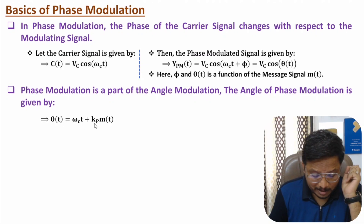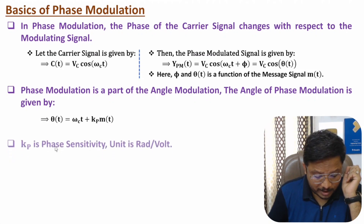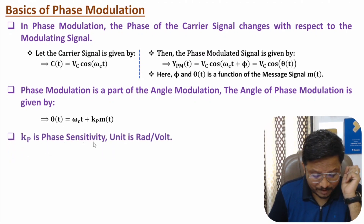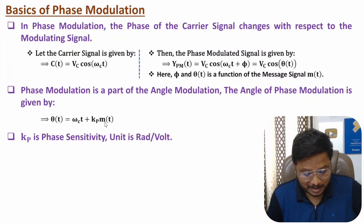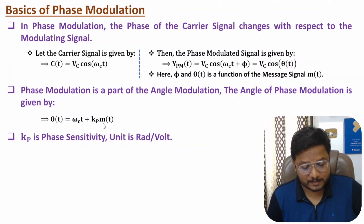The angle of phase modulation is θ(t) = ωc·t + φ, where φ = kp·m(t). As we change the message signal, the overall phase θ(t) changes. The phase changes as per kp·m(t), where kp is phase sensitivity and its unit is radian per volt. So kp in radian/volt multiplied by message voltage gives radians, which is the unit of phase.